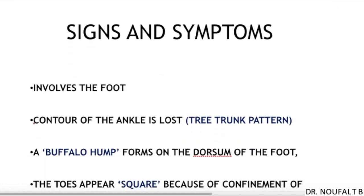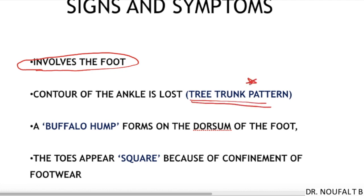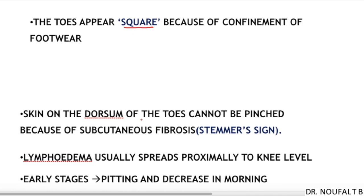If the lymphedema involves the foot, there are some important clinical signs. First is the loss of contour of the ankle, known as the tree trunk pattern. The patient may also develop a buffalo hump on the dorsum of the foot, square toes due to confinement of the footwear, and the skin on the dorsum of the toes cannot be pinched due to subcutaneous fibrosis — this is known as Stemmer's sign.